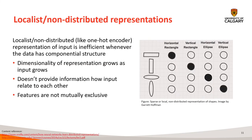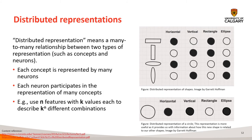Now we will understand distributed representation and its use in neural language models. To understand distributed representation, we first talk about non-distributed, or localist, representation. Localist representation is like what we get from a one-hot encoder — easy to understand and code by hand, but very inefficient when the data has a component structure. As shown in the figure, using local representation to represent input shapes has three problems: first, whenever there is an additional input, we need to increase our dimensionality; second, it doesn't tell us how shapes like horizontal rectangle and vertical rectangle are related; and lastly, if a feature is common between multiple inputs, there is no way to differentiate.